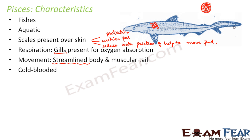Fishes are cold-blooded animals, meaning their body temperature does not remain constant — it matches the temperature of their surroundings. If the surroundings are hot, their body temperature is hot; if cold, their body temperature is also cold.